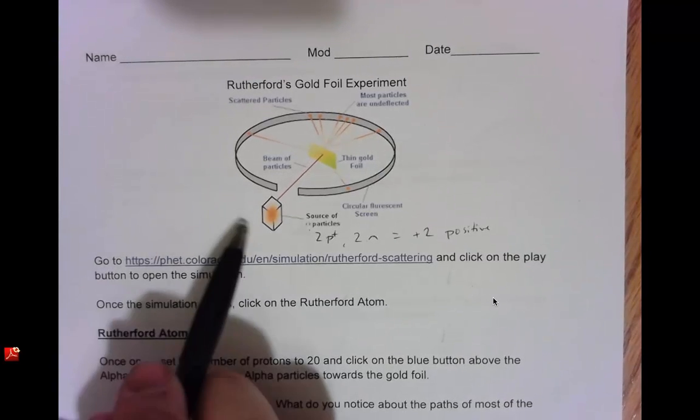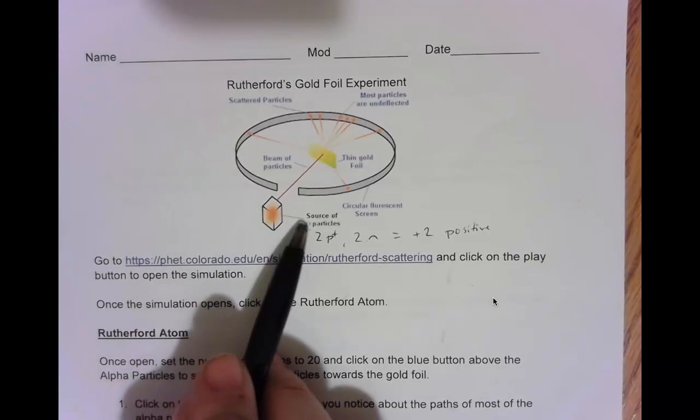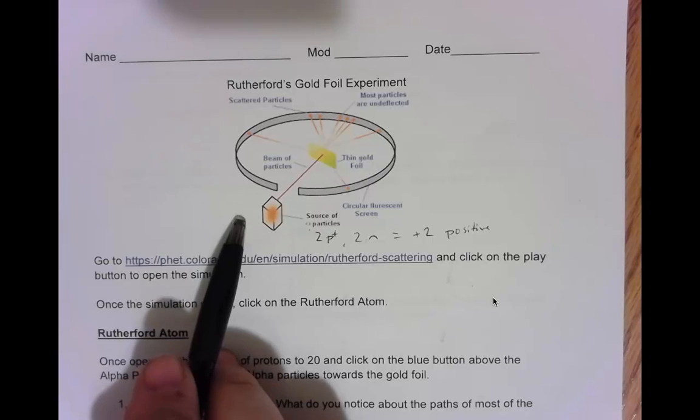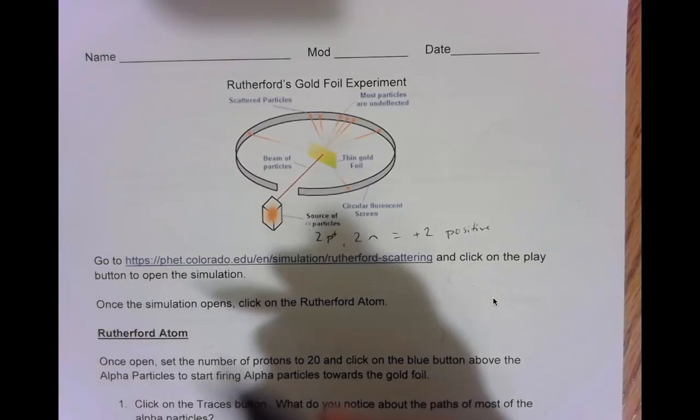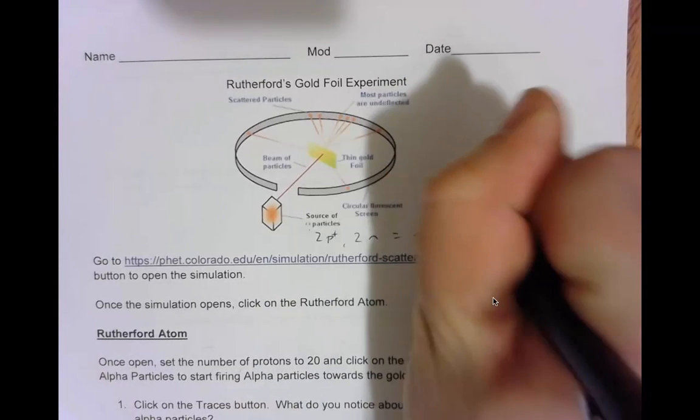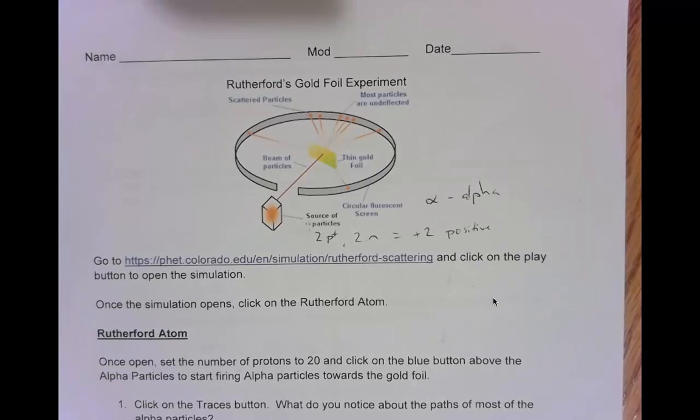The next part of this experiment is that Rutherford was shooting alpha particles at this piece of gold foil. One thing that is hard to read is this symbol. That symbol means alpha. So we have alpha particles.